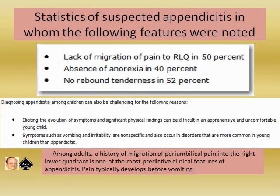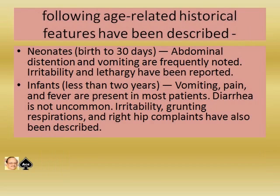The diagnosis of appendicitis among children can also be challenging because eliciting significant physical findings is difficult in an apprehensive and uncomfortable young child. Symptoms such as vomiting and irritability are nonspecific and also occur in disorders more common in young children than appendicitis. Among adults, a history of migration of periumbilical pain to the right lower quadrant is one of the most predictive clinical features of appendicitis, and pain typically develops before vomiting.